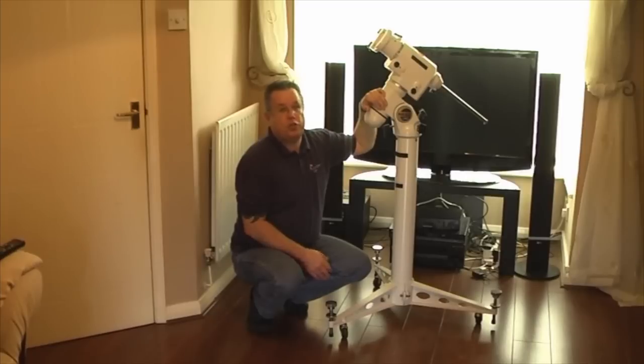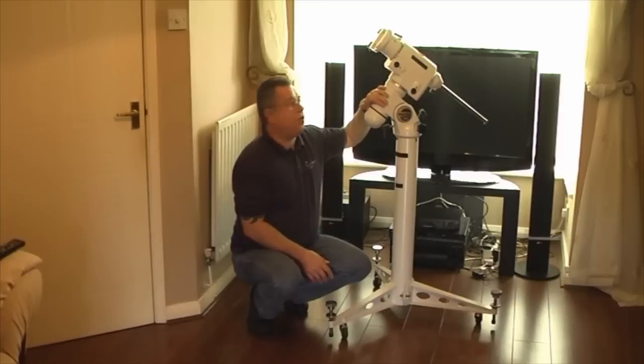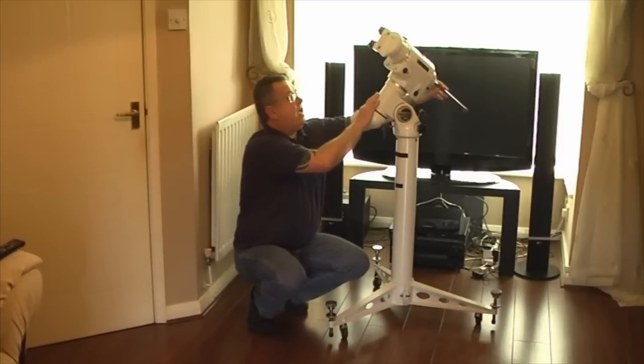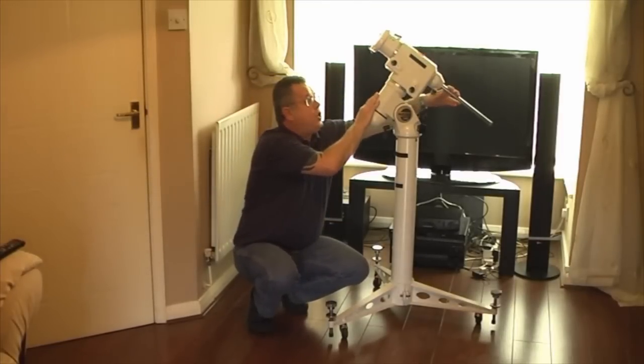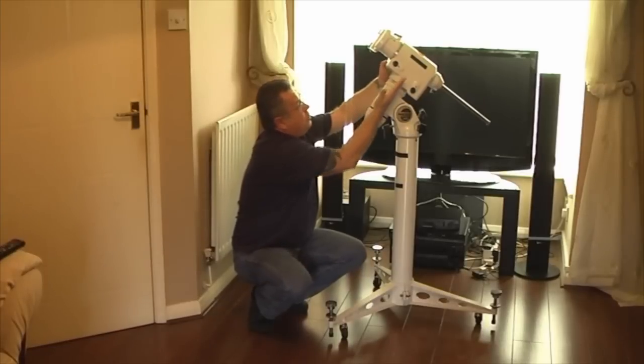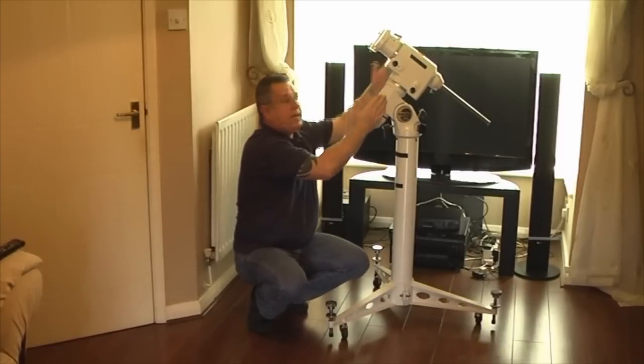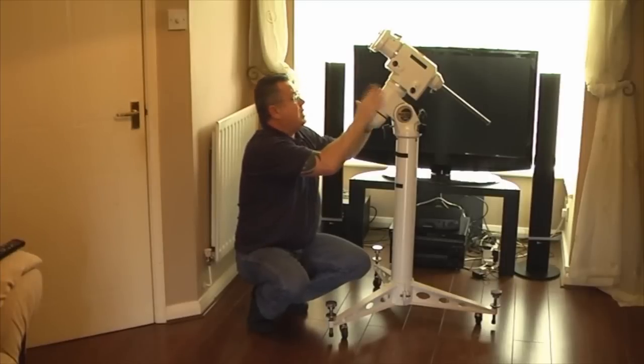Just a brief introduction to what centering your polar scope means. When your mount is tracking, it tracks in right ascension, that's this rotation. Your polar scope looks through this axis so when you actually line up your mount you need it to be centered as much as possible on the north star.